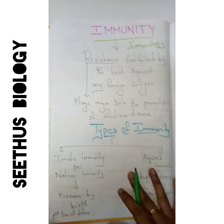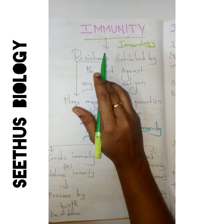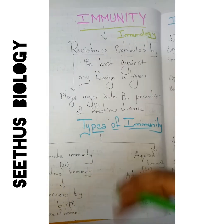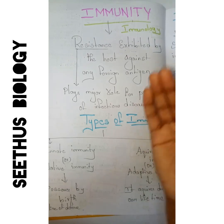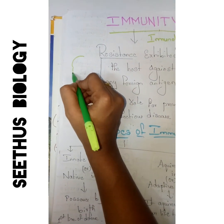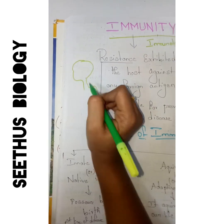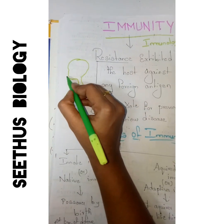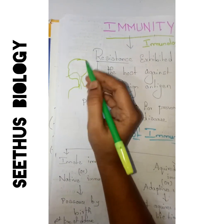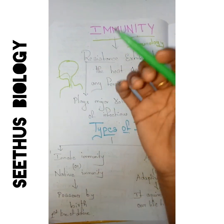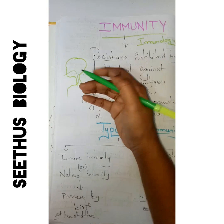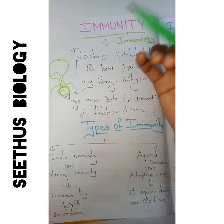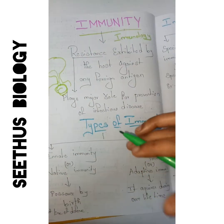What is meant by immunity? It is a type of resistance which is exhibited by our body against any foreign antigen. If any foreign antigen enters our body through any route, then our immune system is going to fight against this antigen — that is known as immunity.